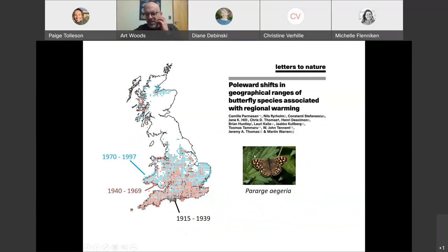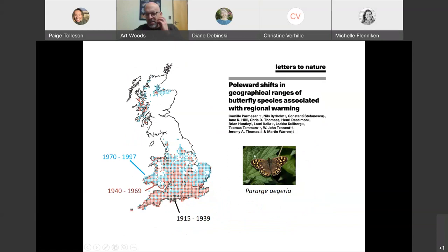For biologists, the concern and the interest is in understanding which species are going to be affected by these changes and what the magnitude of those shifts are going to be. I'm putting up here a paper that probably many of you know, a famous paper from 1999 in Nature by Camille Parmesan and authors who combed through museum records of where insects were distributed over the last century.